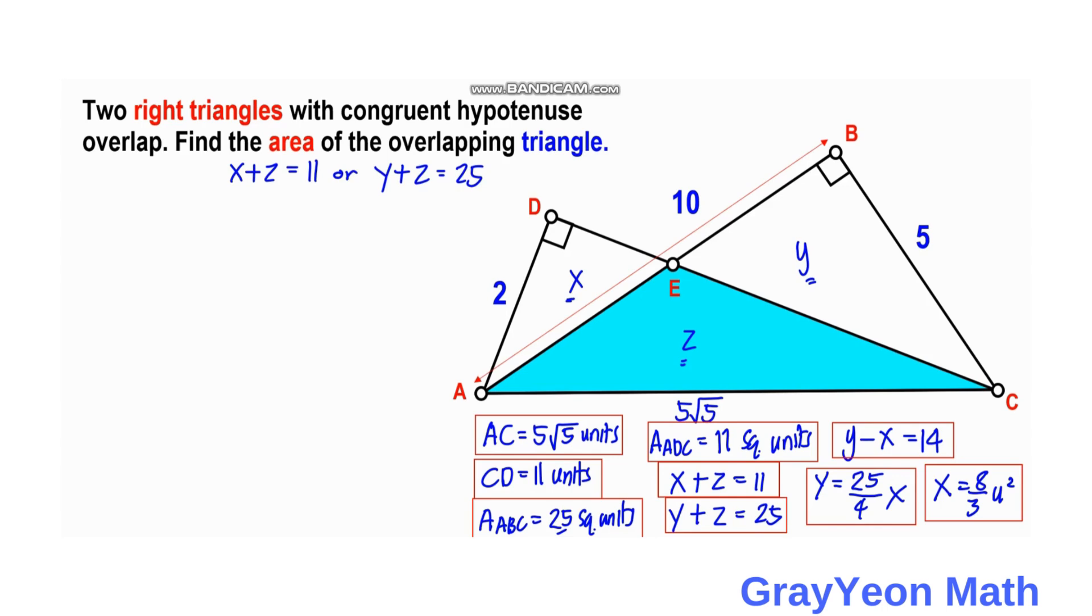Now for the final step, we need to find the value of Z, the area that we are looking for. Z is the area of the blue triangle. We can use either of these two equations, but since we have X, let us use the first. We already have X, so let us use X plus Z equals 11.